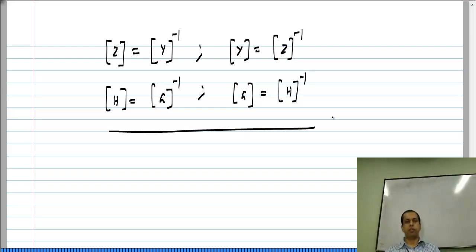If some of these matrices are not invertible, then you cannot invert it and find finite valued parameters. For instance, if H matrix is not invertible, you cannot have finite G parameters for that particular circuit.